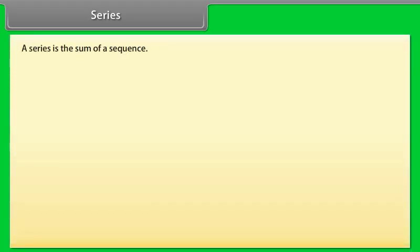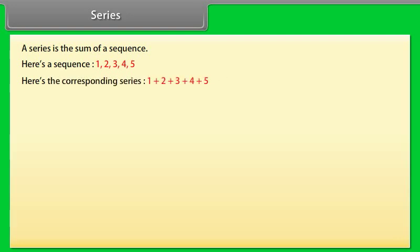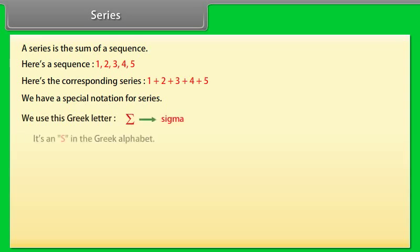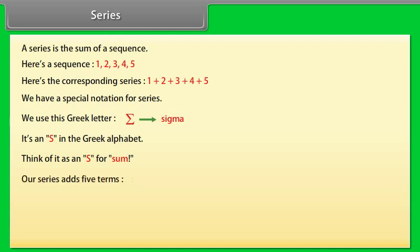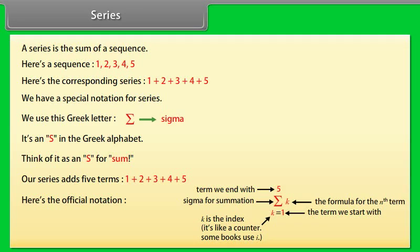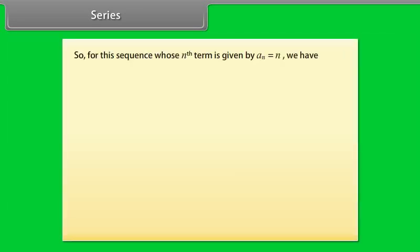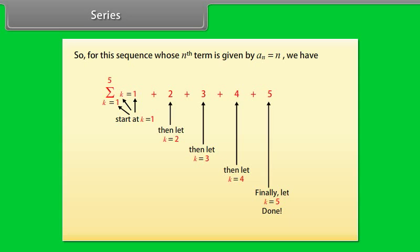A series is the sum of a sequence. Here is a sequence: 1, 2, 3, 4, 5. The corresponding series is 1 + 2 + 3 + 4 + 5. We have a special notation for series — we use the Greek letter sigma, which is an S in the Greek alphabet. Think of it as an S for sum. Our series adds 5 terms. The official notation is: summation from k = 1 to 5 of k. For the sequence whose nth term is a(n) = n, the summation is found to be 15.